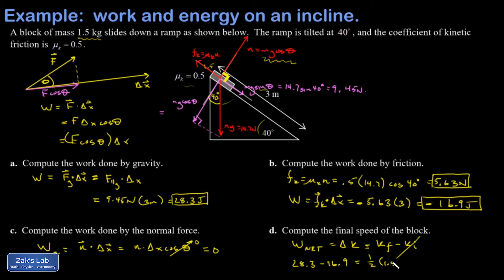My mass was one and a half kilograms. There's not a lot of room down here, so I'm just going to do it all on my calculator. So 28.3 minus 16.9. Then I multiply that by two to get rid of the one-half. Then I divide it by one and a half. And then I have to square root the result. And I get 3.90 meters per second.